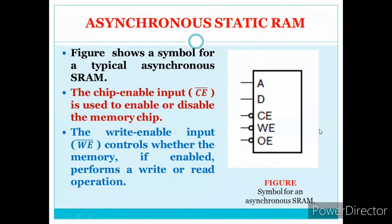Let's look at a simple example of asynchronous static RAM. The symbol of a typical asynchronous SRAM has: address, data, chip enable, write enable, and output enable signals. Note that these control signals are active-low (indicated by bars/bubbles). The chip enable input is used to enable or disable the memory chip.